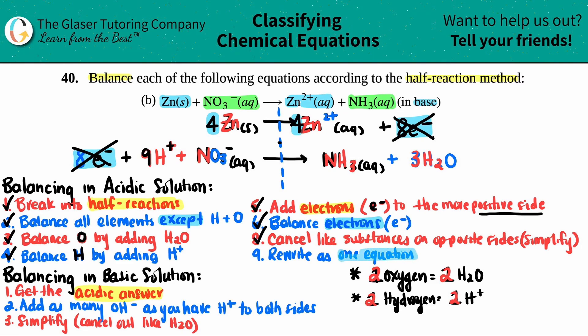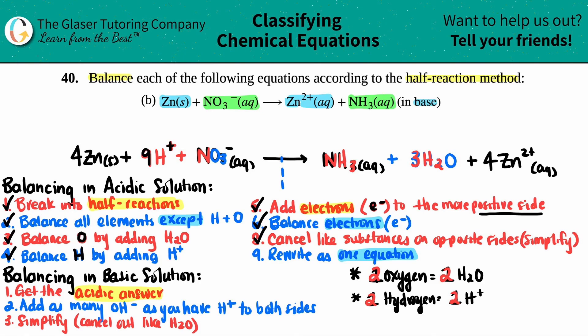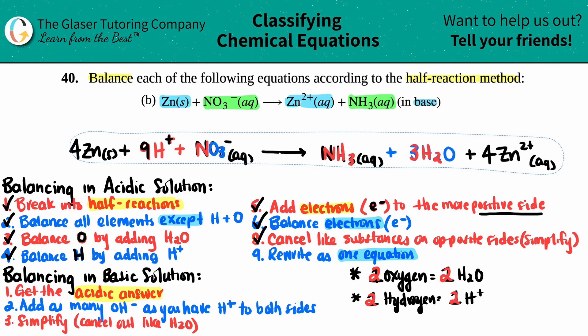Now, all I have to do is just write it back as one equation. Let's just pretend this doesn't exist because this is going. And I'm going to just say four Zn solid. You see how everything is now on one side for this side. And now for this one, I don't need this anymore because this is canceled out. And I just need to add that zinc at the end. So four Zn²⁺ aqueous. Now I have my balanced acidic solution. This is your final answer. And now we got to do the base.